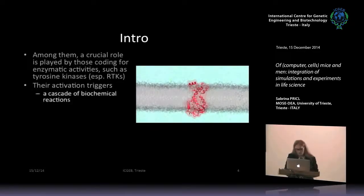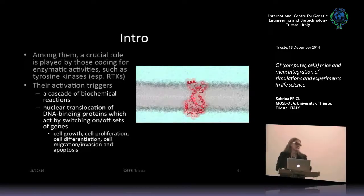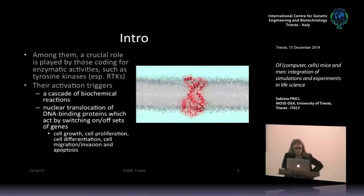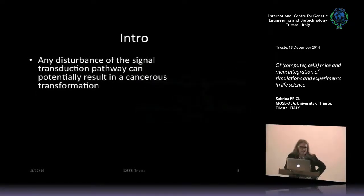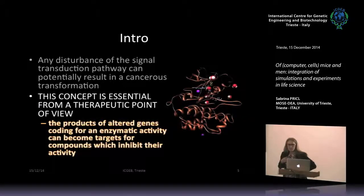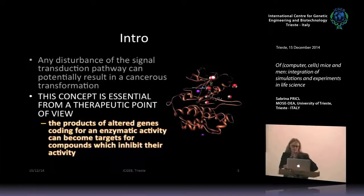The activation of these enzymes normally triggers a cascade of biochemical reactions, which in turn give rise to nuclear translocation of several DNA-binding proteins. These proteins then switch on or off sets of genes, proceeding to many important processes like growth, proliferation, migration, invasion, and apoptosis. Any disturbance to this signal transduction pathway can potentially result in a cancerous lesion. But ironically, this concept is essential from a therapeutic viewpoint: the expression of this altered gene coding for enzymatic activity can become a target for small compounds that can hit these molecular targets and inhibit their activity.